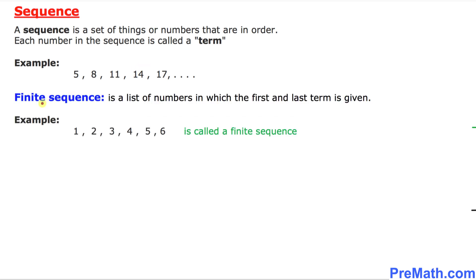The first type of sequence is called a finite sequence. It is a list of numbers in which the first and the last term are given. As you can see, this is a finite sequence — the first term is given and the last term is given as well.